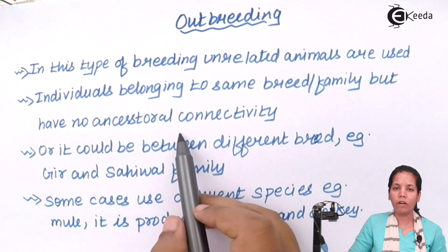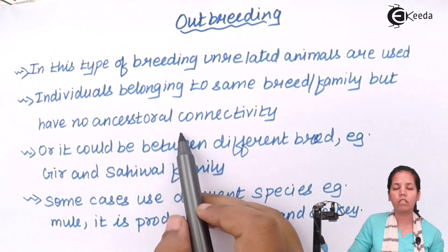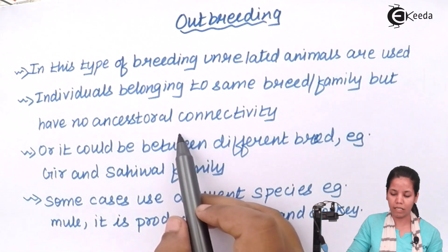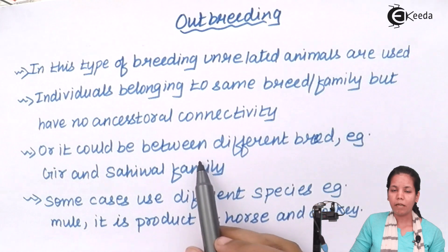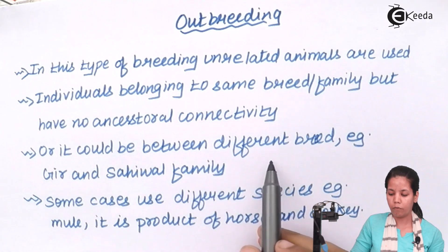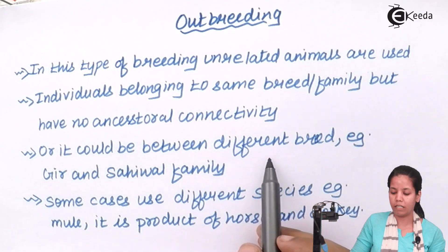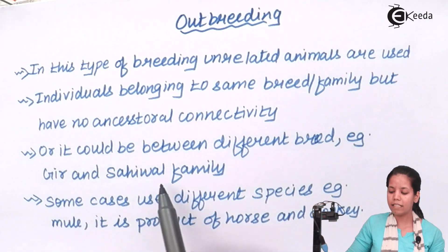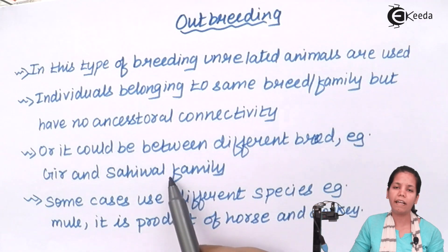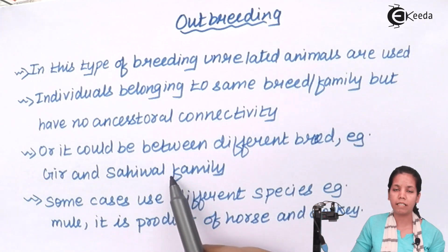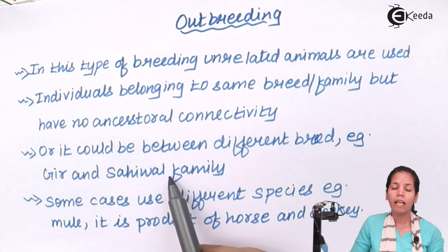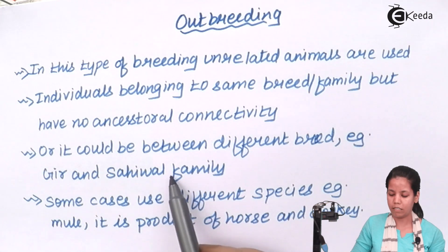For example, the mother, grandfather, or daughter of the same family cannot be used in outbreeding — it has to be different families, though the community could be the same. Sometimes, different breeds or two different community breed cattle are used. For example, we could use the Gir and Saival families — these are two entirely different breeding families, and in outbreeding, something of this sort is done.